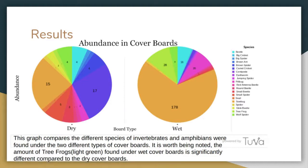These pie graphs show the abundance between wet and dry coverboards. The wet coverboards had a large amount of frogs — a total of 28 frogs found under them throughout the whole data collection process — as well as a large amount of isopods, 178 isopods to be exact. The dry coverboards were almost the opposite: they had no frogs and few isopods. The species most present under the dry boards were crickets and spiders.